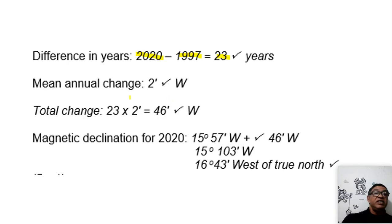I get a mark for that. Then I need to indicate what was my mean annual change. I take it directly from the information. It was two minutes westwards. Just for writing that, I get a mark. Eventually, I have to work out my total change from 1997 to 2020.